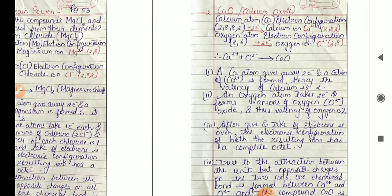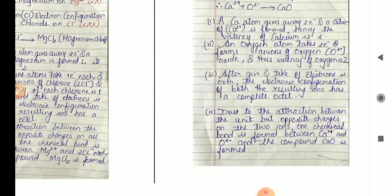Ca2+ plus O2- gives CaO. A calcium atom gives away 2 electrons and a cation of calcium Ca2+ is formed. Hence the valency of calcium is 2. An oxygen atom takes up 2 electrons and forms anion of oxygen O2-, that is oxide, and thus the valency of oxygen is 2. After give and take of electrons is over, the electronic configuration of both resulting ions has a complete octet. Due to attraction between the unit but opposite charges between the two ions, a chemical bond is formed between Ca2+ and O2-, and thus a compound CaO is formed.